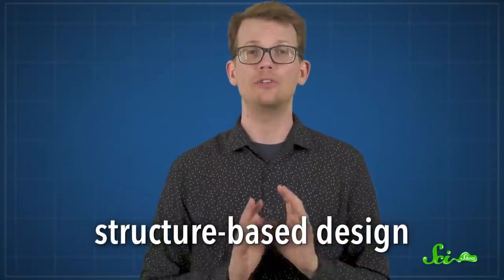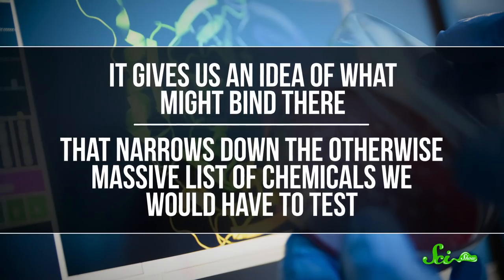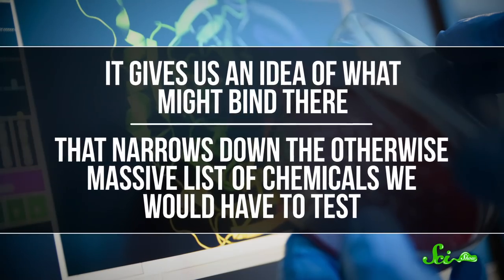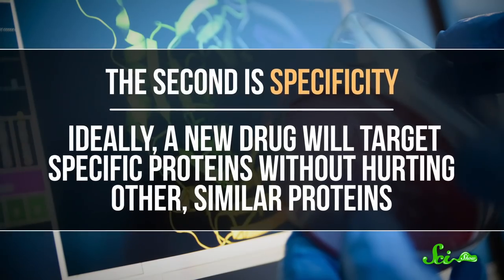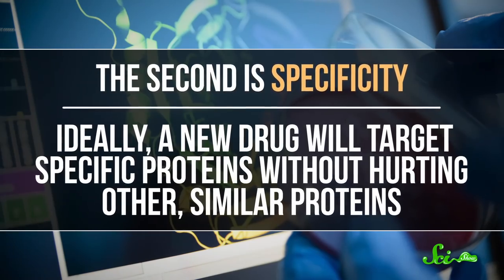Which brings us to another strategy: structure-based design. There's a few reasons why knowing a protein's structure is important for developing medicine. First, it gives us an idea of what might bind there, and that narrows down the otherwise massive list of chemicals we'd have to test. The second is specificity. Ideally, a new drug will target specific proteins without hurting other similar proteins. So how do we figure out what proteins look like?